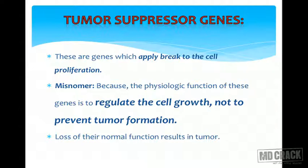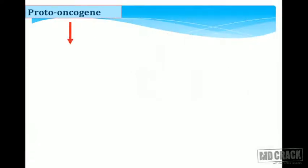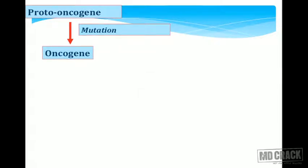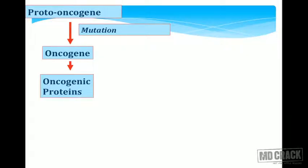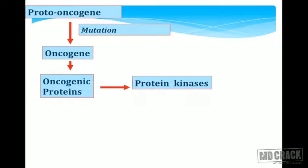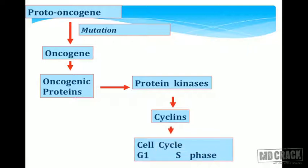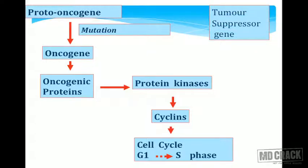Their main function is to regulate the cell growth and cell cycle, not to prevent tumor formation. We already know that proto-oncogenes are converted into oncogenes with mutations, translocations, and other genetic defects. Once oncogenes are formed, they produce oncoproteins or oncogenic proteins. These oncogenic proteins are able to activate protein kinases, which in turn activate cyclins. Cyclins are cell cycle drivers that initiate the cell cycle and make the cell progress from G1 to S phase. This entire phenomenon is well regulated by tumor suppressor genes.